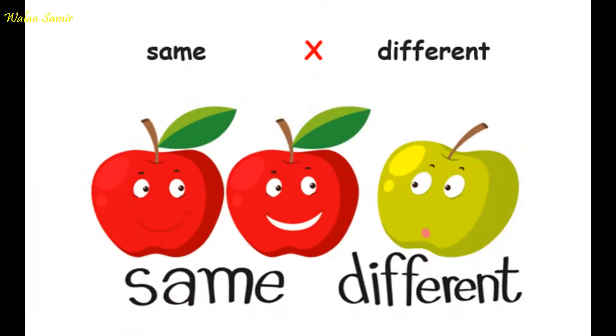Comparing. We have here same and different. As you can see, the two red apples are similar or are the same. They have the same size, the same color, while the green apple has a different color and a different size.